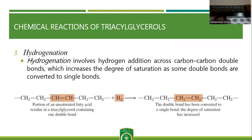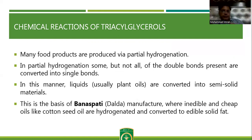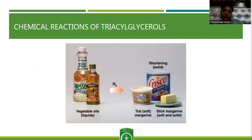Hydrogenation: what is hydrogenation? It involves the addition of hydrogen across double bonds, which increases the degree of saturation as some double bonds are converted into single bonds, and oil changes into ghee. Many food products are produced via partial hydrogenation to increase the shelf life of that fat. In partial hydrogenation, some but not all of the double bonds present are converted into single bonds. In this manner, liquid oils are converted into semi-solid materials. This is the basis of Vanaspati or Dalda ghee manufacture, where cheap oils like cottonseed oil are hydrogenated and converted into edible solid fat used in paratha making and many other products.